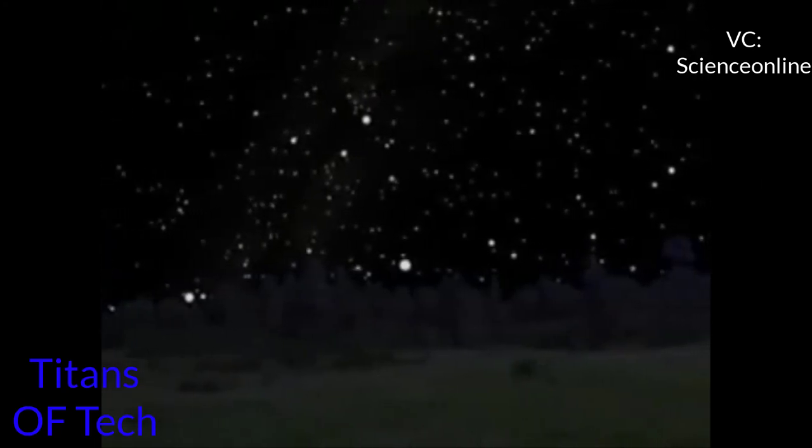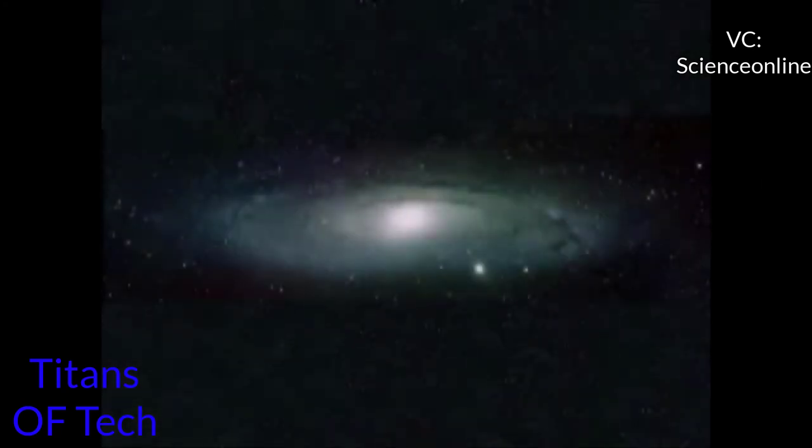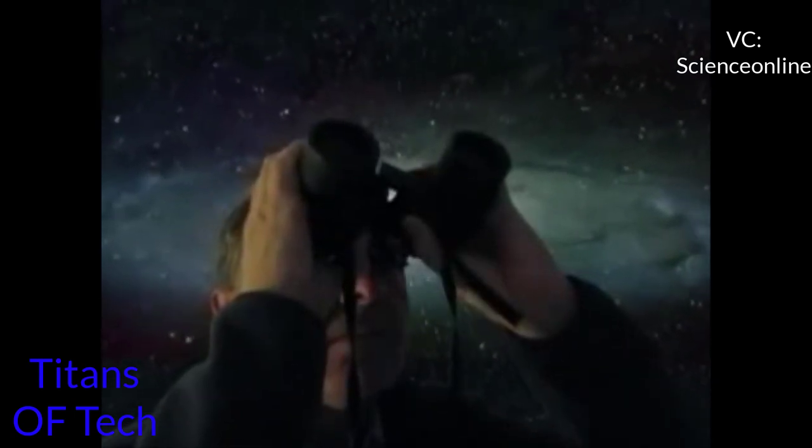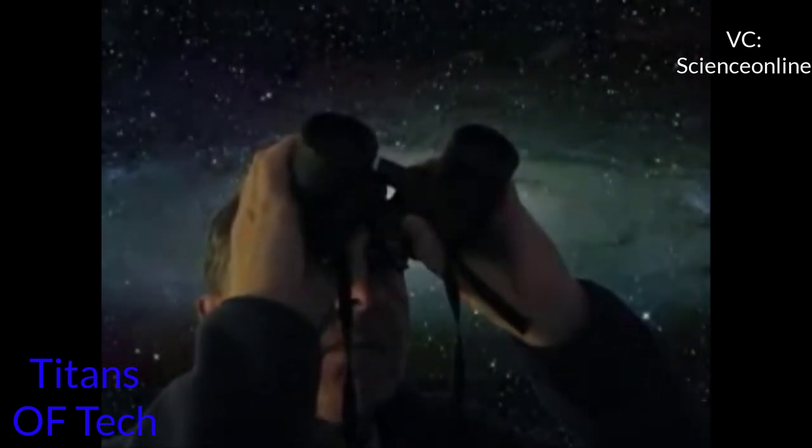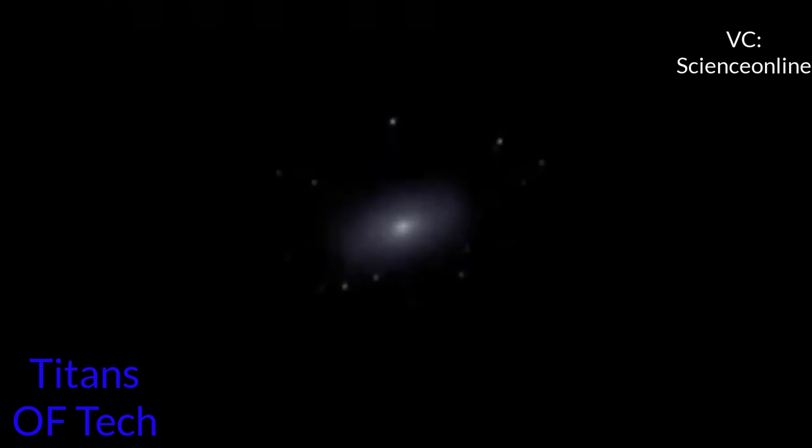Now that we have located M31, the Andromeda Galaxy, let's talk about what we are seeing. Through binoculars the image is subtle, but how exciting to know that you are looking at a galaxy. Billions of stars bound by gravity sitting 2.5 million light years from Earth.